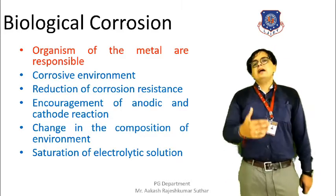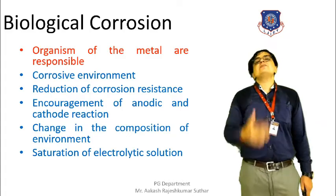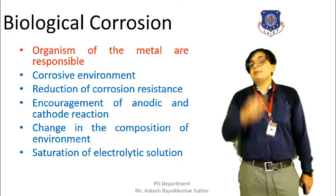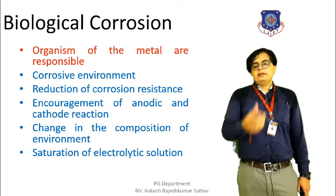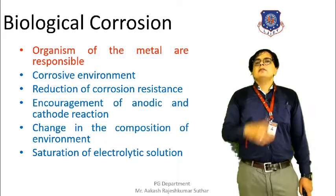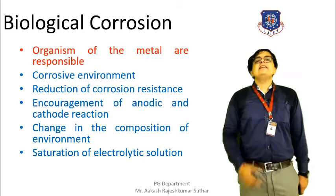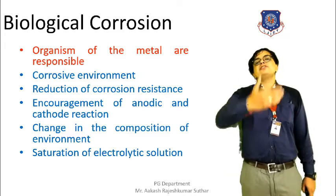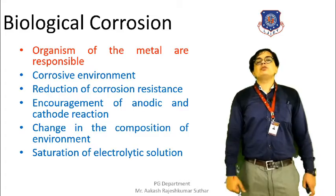Another condition is the saturation of the electrolytic solution. When a corrosion condition is found on a metal surface, a galvanic cell type of condition is formed. In such an electrolytic cell, anodes, cathodes, and electrolyte are present. When the electrolyte solution accelerating the corrosion becomes saturated, biological corrosion can occur. These are the conditions that can cause biological corrosion on metal.